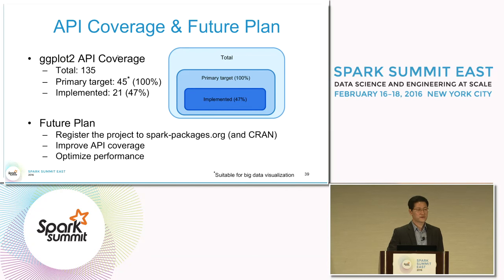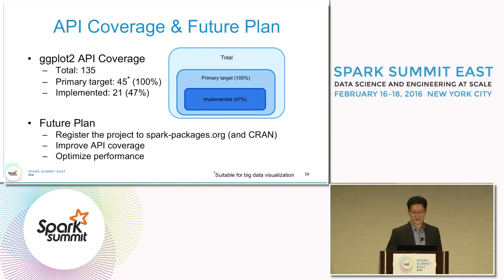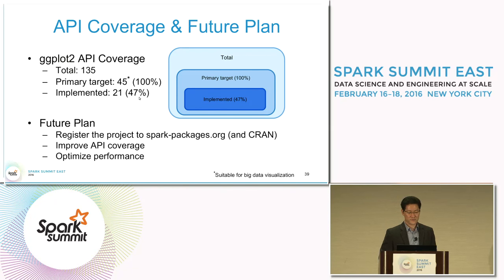We have API coverage and future plans on this slide. ggplot2 has a total of 135 functions including graph types and options. Our primary target was about 45 of those, which we think are suitable for big data visualization. We have implemented 21 of them, which corresponds to 47%.